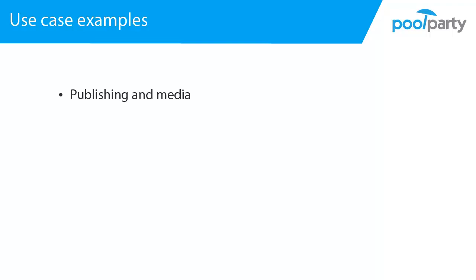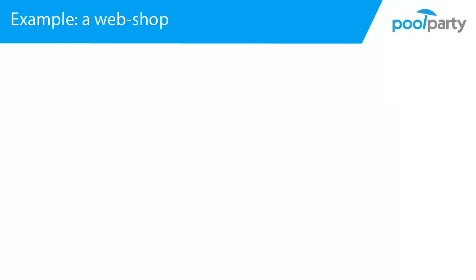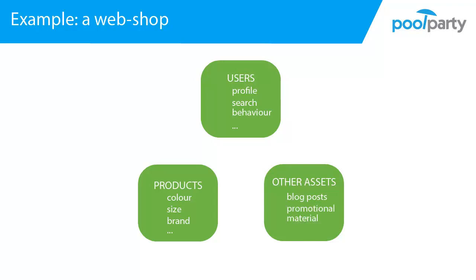Using taxonomies in media and publishing is handy for managing metadata, tagging content automatically or semi-automatically, supporting your authors with a consistent vocabulary, and search engine optimization. As a second use case, let's look at how you could use taxonomies to organize your webshop. Say you have a large number of different products with characteristics such as color, size, brand, and so on. You also have different users with different profiles, preferences, and search patterns. You may also have additional information such as blog posts or promotional material you want to suggest to users with a certain profile or together with certain products.